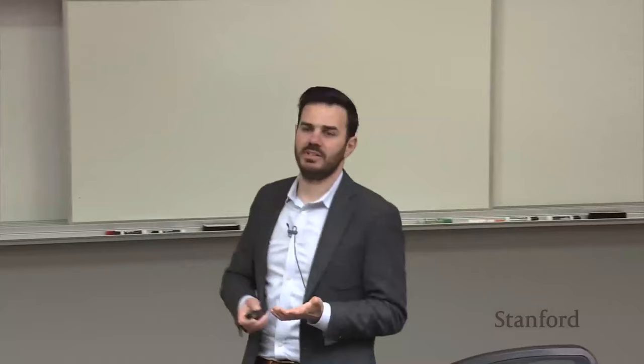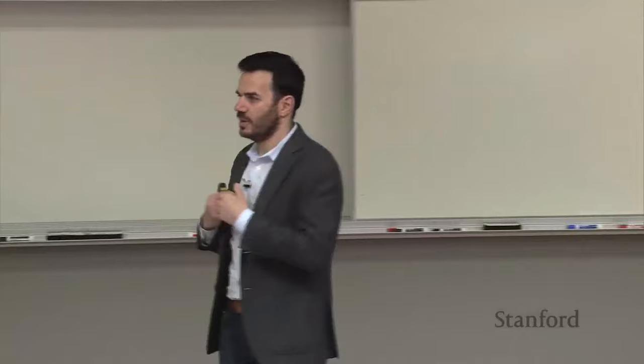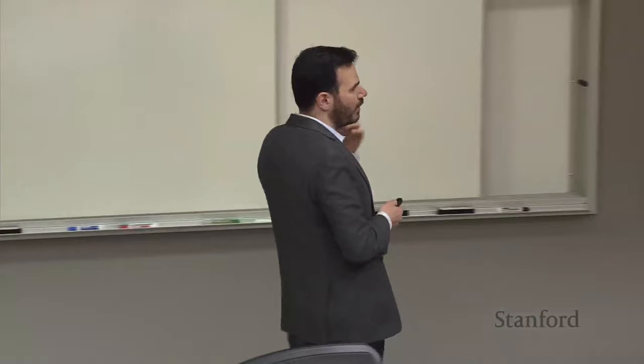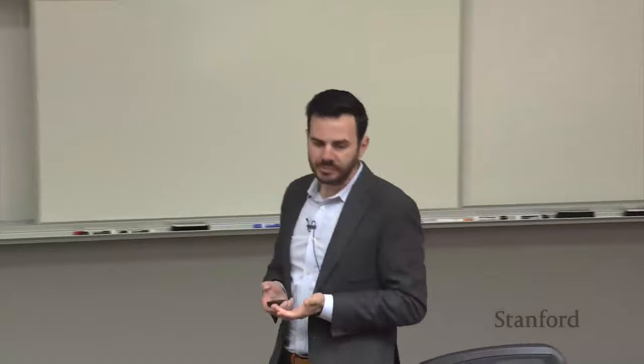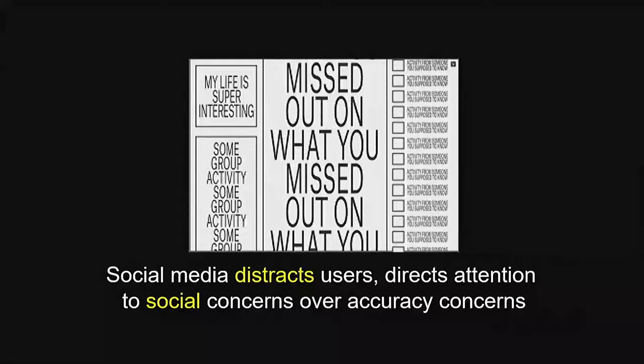The question I've been particularly interested in is: what can we do to complement these content-specific interventions? In particular, what are content-neutral interventions — things where you don't need to know anything about the specific content people are seeing in order to get them to be less likely to share it? The work I'm going to talk about today takes a particular approach to this kind of content-neutral intervention built on insights about why people share misinformation.